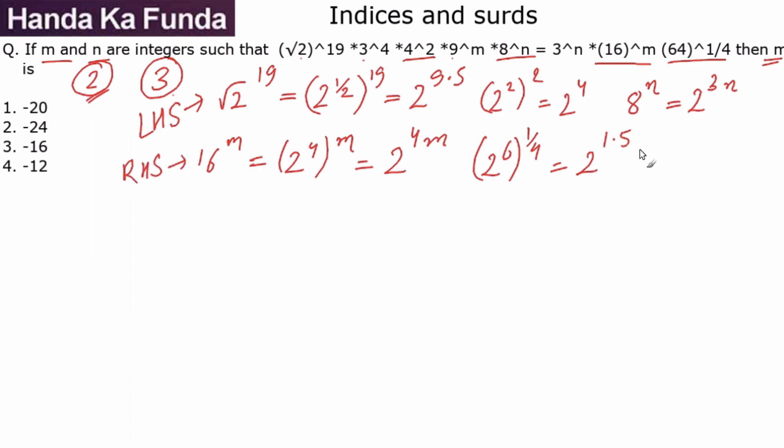Power of 2 on the left-hand side and the right-hand side should be the same, which means I will get the equation. For the left-hand side, what is the power of 2? 9.5 plus 4 plus 3n. From here, on the right-hand side, what do I have? I have 4m from here and 1.5 from the other side.